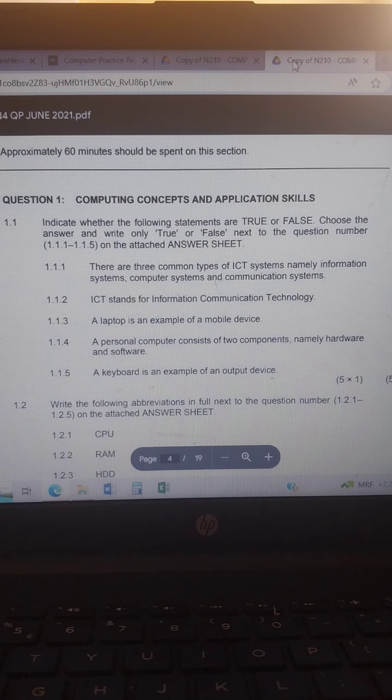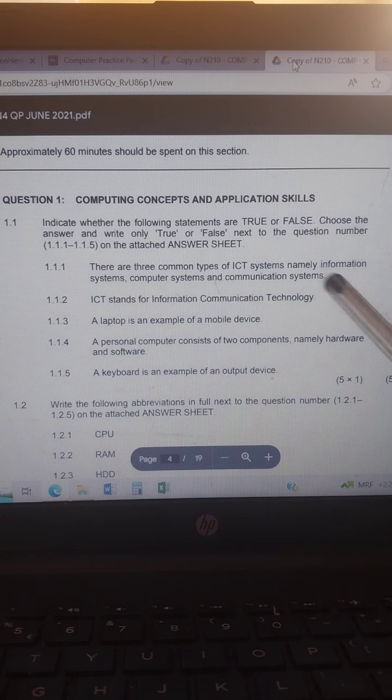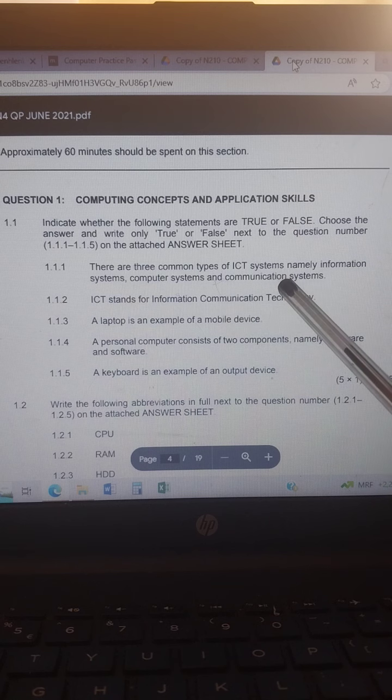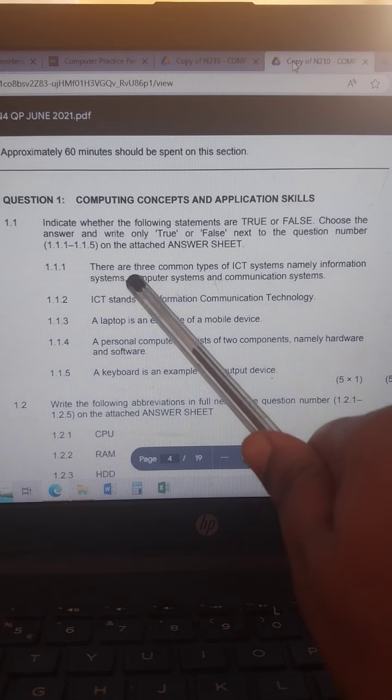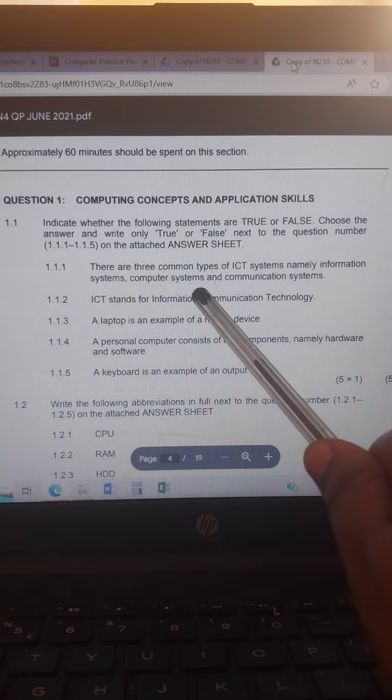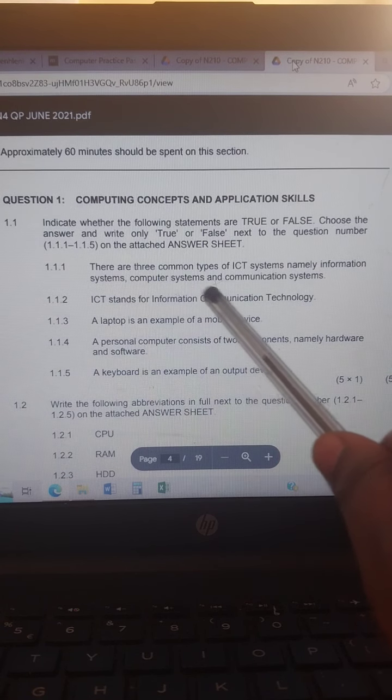Information systems, computer systems, and communication systems. Information system is true, but we don't have computer system, it's control system. So which means 1.1.1 is false because of computer. It's only control system.